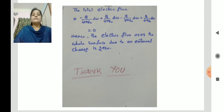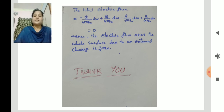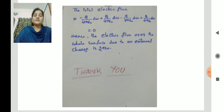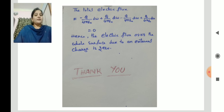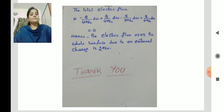Summing up all the flux through all the elemental areas, the total electric flux is 0. Hence, the electric flux over the whole surface due to an external charge is 0. When the charge is placed inside, the electric flux is 1 by epsilon naught times the total charge. Whereas when the charge is placed externally, outside the closed surface, the electric flux over the whole surface is found to be 0, which verifies Gauss law. Thank you.